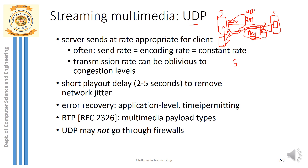In UDP streaming, the sending rate and encoding rate should match — they should happen at a constant rate. For example, if the client's play-out rate or consumption rate is 2 Mbps, and a UDP datagram carries 8,000 bits, we need to determine what the server's sending rate should be.